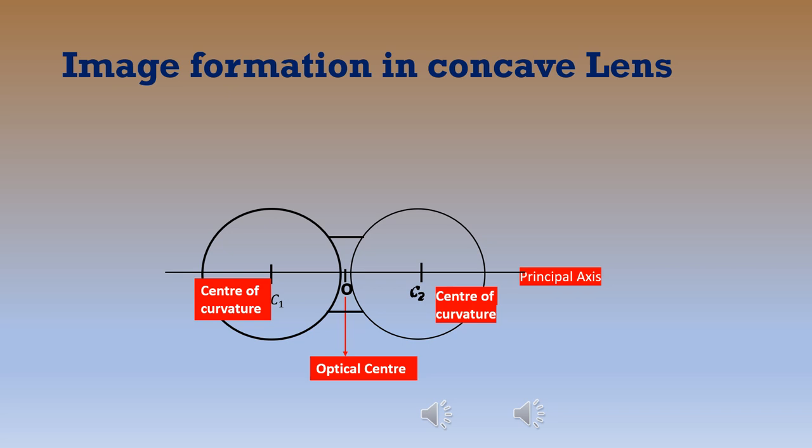First of all, we have to learn about the center of curvature, optical center, and principal axis of concave lens. Center of curvature is the center of the circle of which the lens is a part. There are two centers of curvature, C1 and C2, as shown in the diagram. Optical center O is the center of the lens itself. The principal axis is the line passing through the centers of curvature of the concave lens.